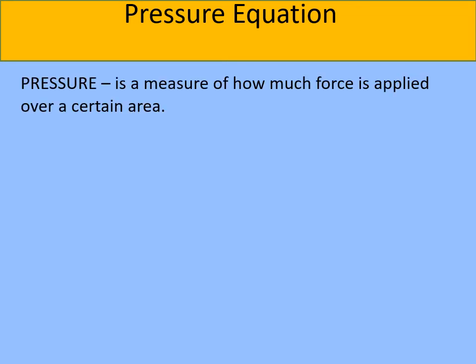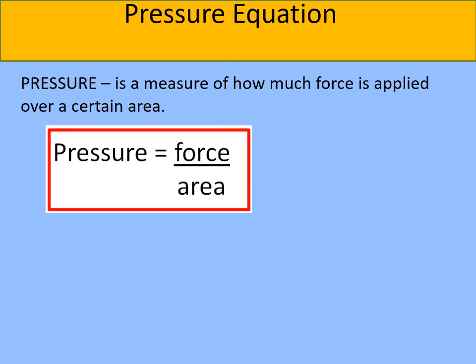Pressure is defined as a measure of how much force is applied over a certain area. The equation you need to know is: pressure equals force — measured in newtons — divided by area — measured in metres squared. The unit for pressure is newtons per metre squared. There is also an alternative unit for pressure called pascals, but you'll mainly be working with newtons per metre squared.